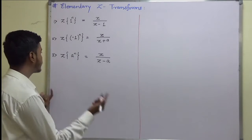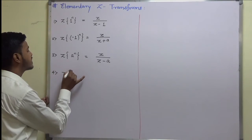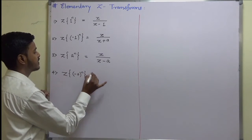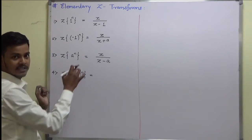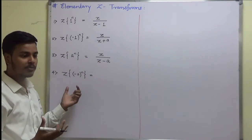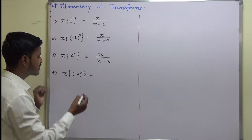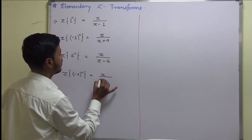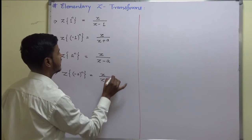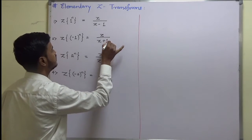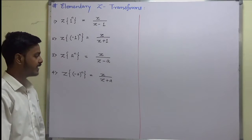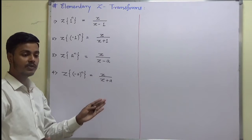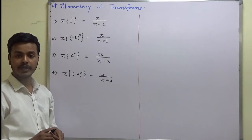Likewise, the Z transform of (-a)^n — you should compare with the previous results and have your own ideas to remember these things. It is going to be z/(z+a). Are these Z transforms clear to you? If these are clear, we can move ahead.